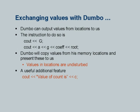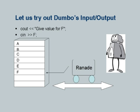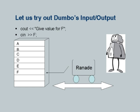Similarly for output — Dumbo can output values. We mention specifically that Dumbo will copy values from his memory locations and present them, and values in locations are undisturbed. A useful additional feature we introduce is that a character string can be displayed on the terminal. If this is the cout instruction and a value is given, it will go to display. We emphatically state that the distinction between a numerical value and character string value — which will be explained later — should be remembered. For example, we will later associate a data type with a memory location, so it will not be possible to put a string in a memory location declared for numerical values.